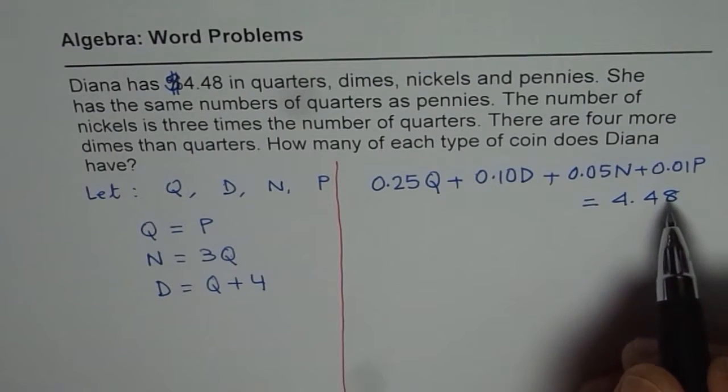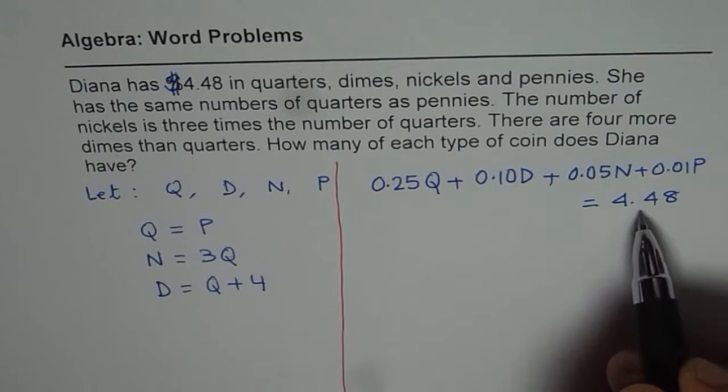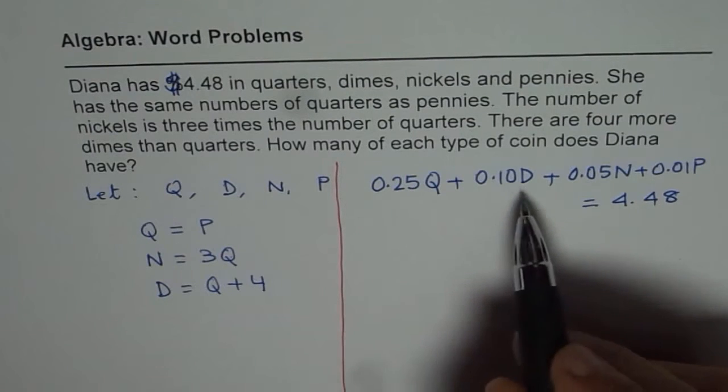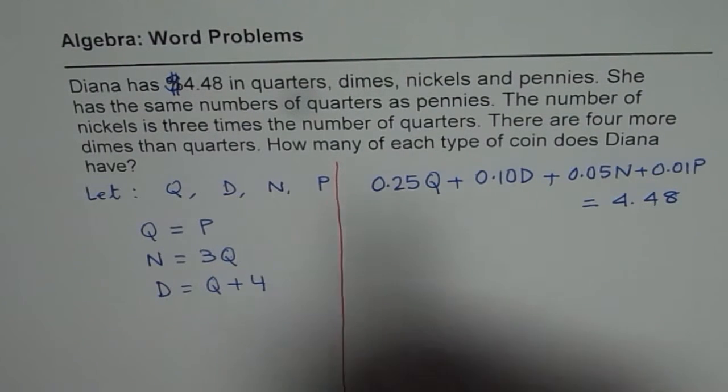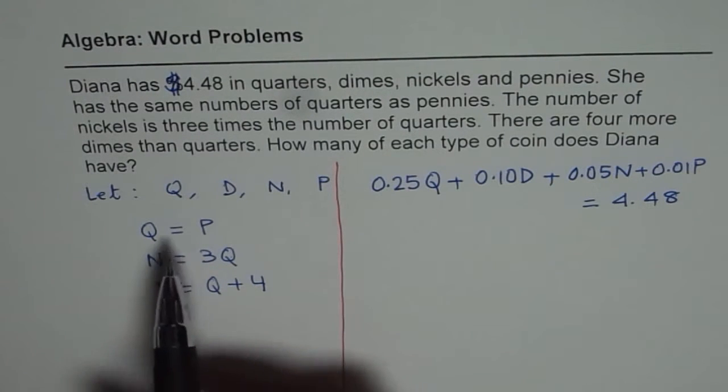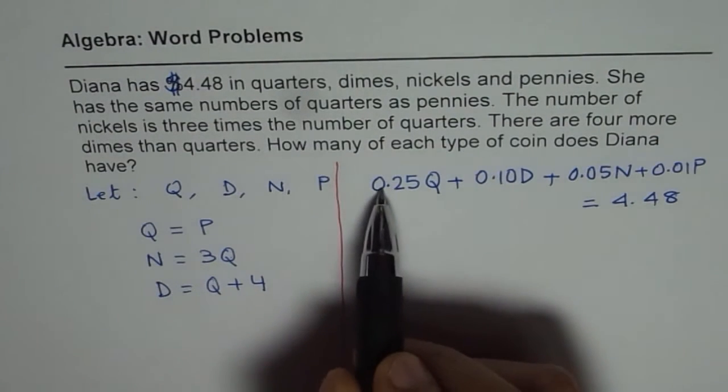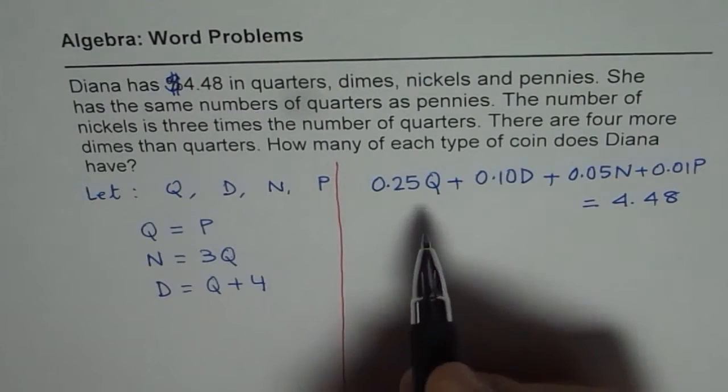At times you can also convert them to pennies or cents and then do without decimals. That is an option. So let's do in decimal numbers this time. So now we know we can write everything in terms of quarters.